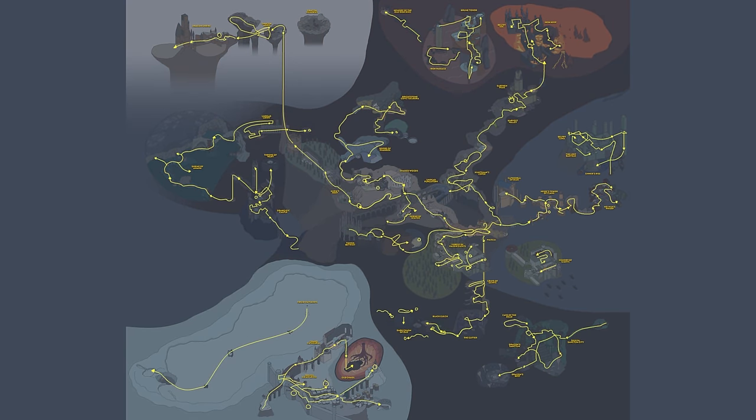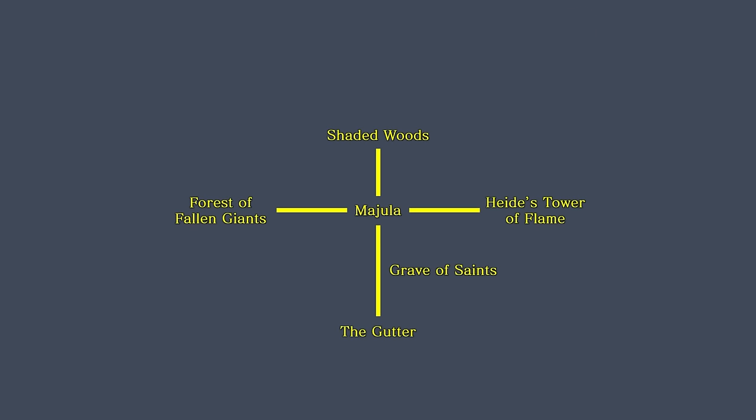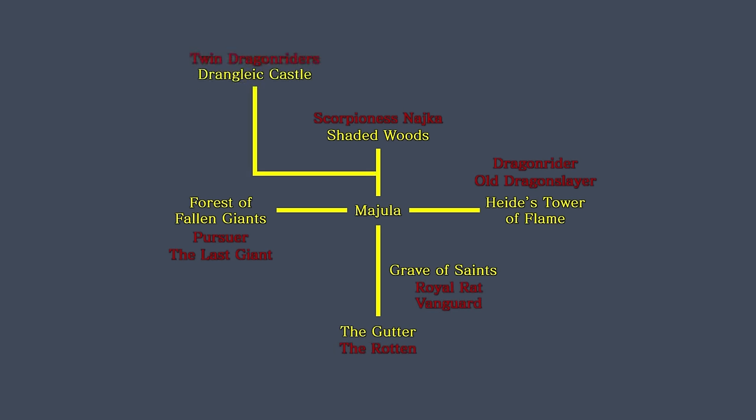In terms of design, compared to Dark Souls 1, this one's even more open-ended. We can go in any of the four primary directions, more or less. There's a branch a short ways into the forest if we want to go to the Shaded Ruins first, and the Silver Cat Ring isn't too expensive if we want to go down the well. For our first boss, we can start with the Pursuer or the Last Giant, the Dragonrider or the Old Dragonslayer, Scorpioness Najka, the Royal Rat Vanguard, or the Rotten. Even Drangleic's twin Dragonriders, the Darklurker, or Aava can be your first boss if you grind out a million souls to open the Shrine of Winter.